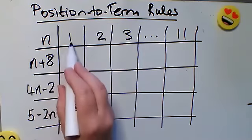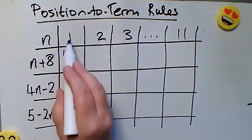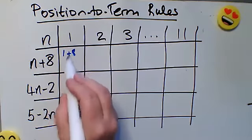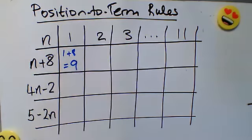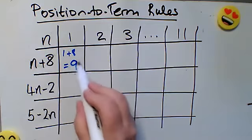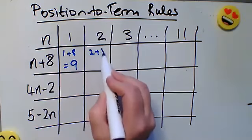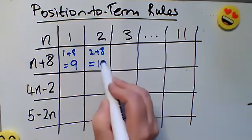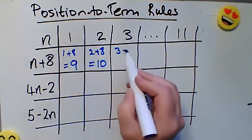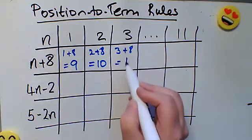So the first term in this sequence, the first position is 1 plus 8 which would give me 9. So the first term in this sequence is 9. The second term in the sequence, n is 2 and 2 plus 8 is 10. The third term would be 3 plus 8 which is 11.